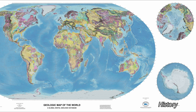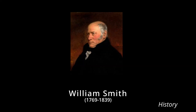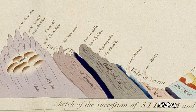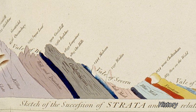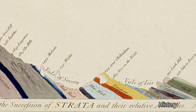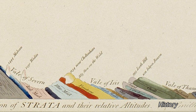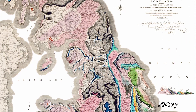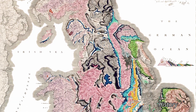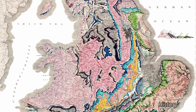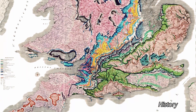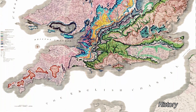The first modern geologic map was drawn by William Smith (1769–1839), a British canal builder. He recognized that sedimentary rocks occurred in a consistent sequence throughout the countryside. Knowing the position of a coal bed within the sedimentary rock sequence in one location allowed Smith to predict its occurrence and depth beneath the surface in other locations. Knowledge of rock sequences also allowed Smith to predict the kinds of rocks that would be encountered during canal construction.